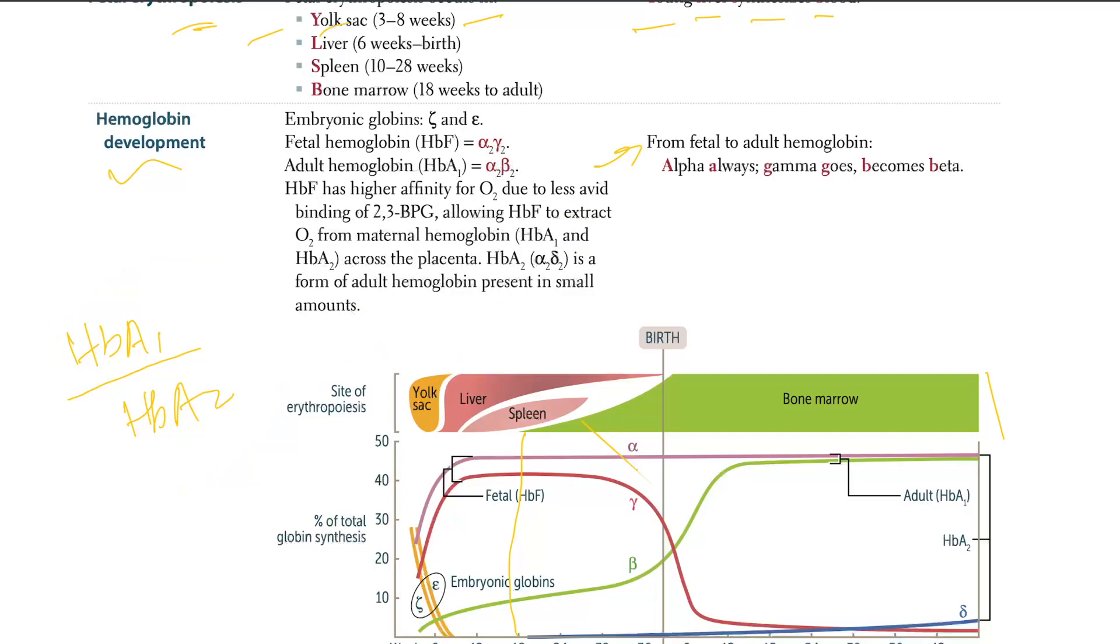So fetal hemoglobin to adult hemoglobin is alpha, always. Looking at the graph at the bottom, alpha is always, alpha, always. So look at alpha, this is alpha. It came, it started right here, it's all the time, present continuously. Alpha is always. So look at these alphas too, always, always, always, always alpha.